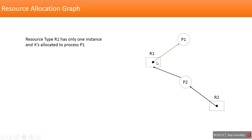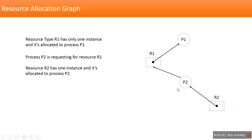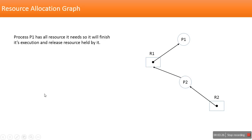Looking at the edges: there is a directed edge from R1 to P1, meaning R1 is allocated to process P1. There is a directed edge from P2 to R1, meaning P2 is waiting for resource R1. And there is a directed edge from R2 to P2, meaning R2 is allocated to process P2.